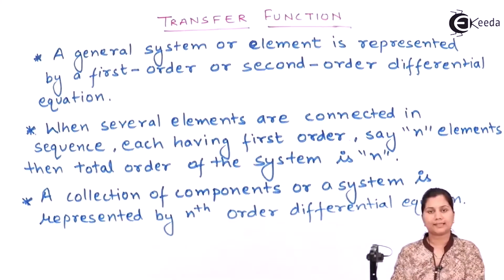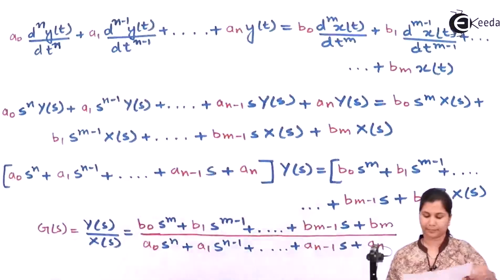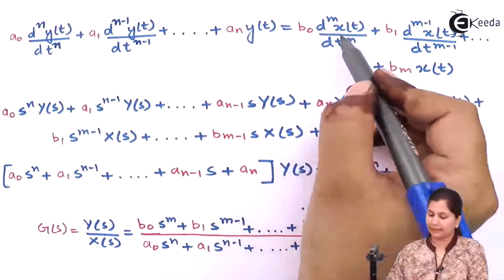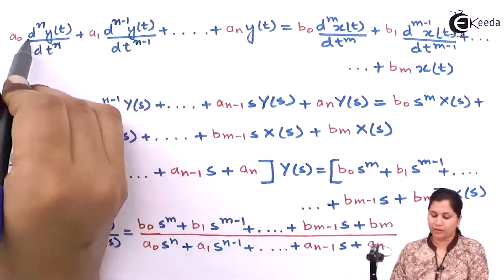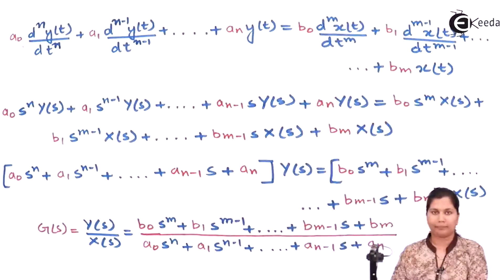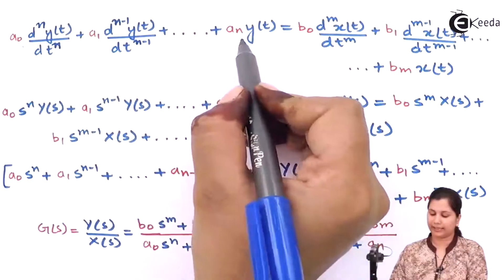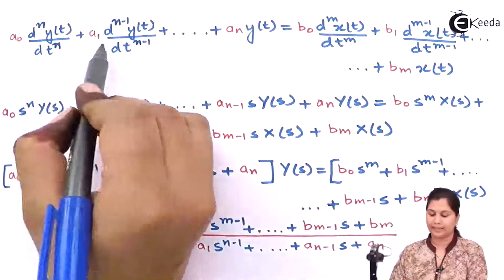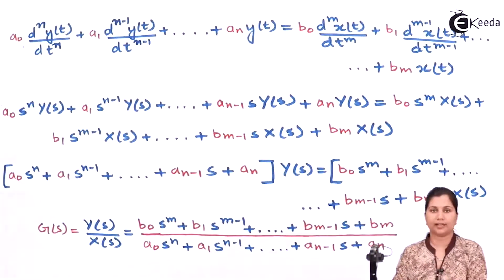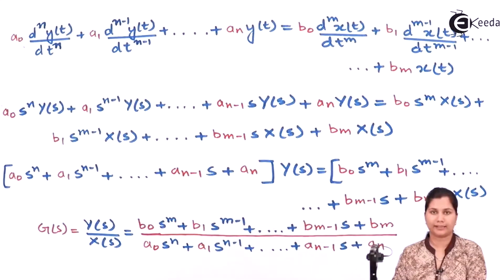If we represent a system by a differential equation, then it will be given by this nth order differential equation, where y(t) is the output and x(t) is the input. The order of the output is n and the order of the input is m. The coefficients are a0, a1, ..., an and b0, b1, ..., bm. This is how an nth order differential equation is written for a system — this is a linear time invariant differential equation.